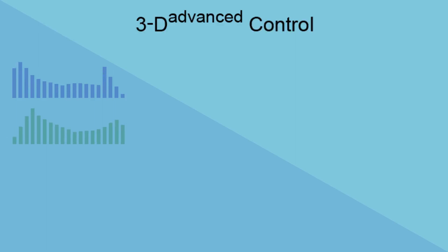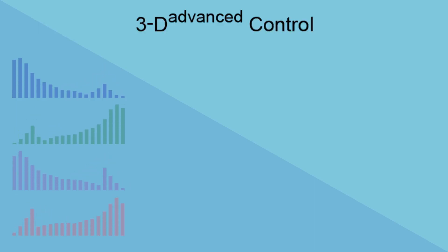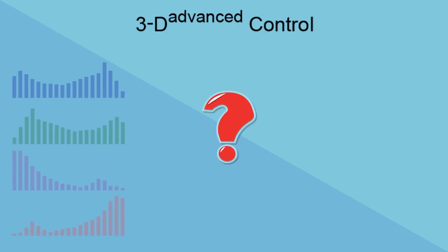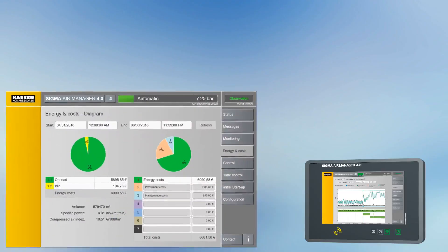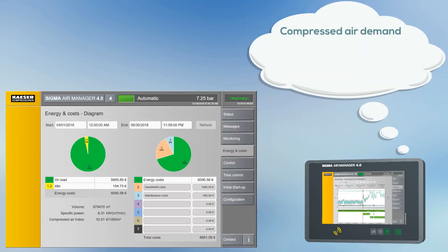the controller constantly monitors performance of the entire system by continuously running a multitude of simulations in the background. In this way, it is always able to determine the most energy efficient compressor combination. Integrated energy monitoring also makes it possible to quickly and easily establish compressed air consumption and energy costs and to identify trends.